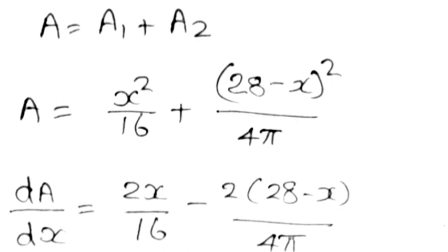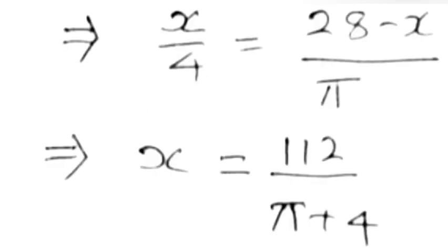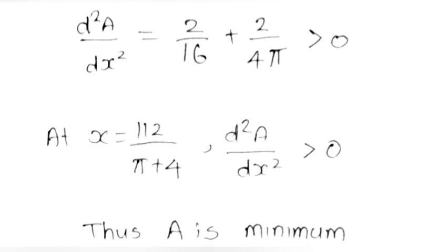dA/dx = 2x/16 − 2(28 − x)/(4π). Setting dA/dx = 0: 2x/16 = 2(28 − x)/(4π), which gives x = (28 − x)/π, so x = 112/(π + 4). d²A/dx² = 2/16 + 2/(4π) > 0 at x = 112/(π + 4).